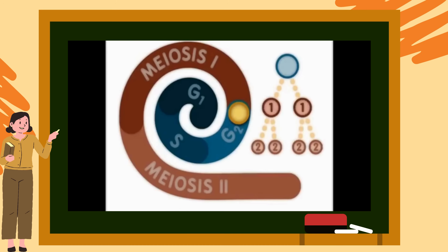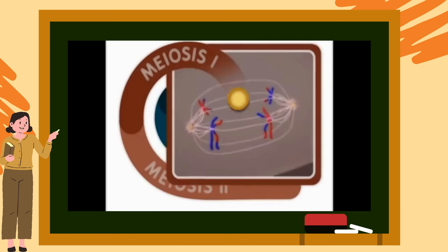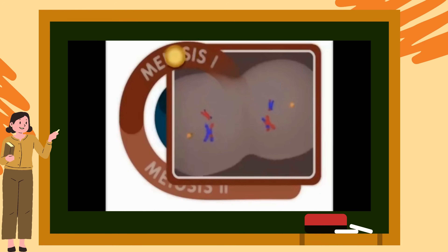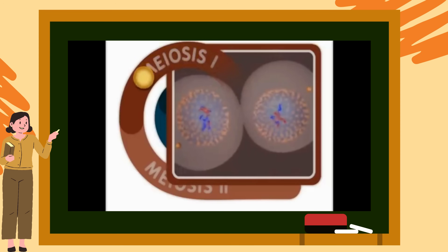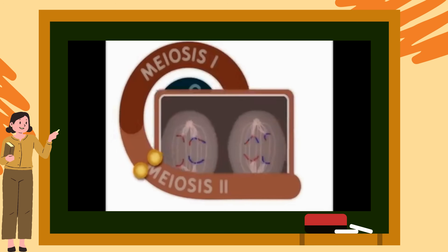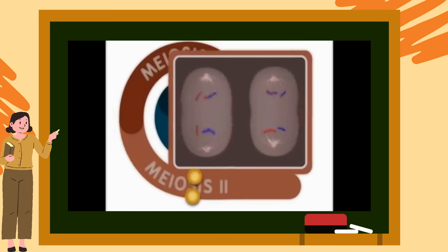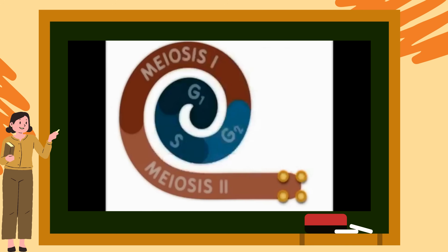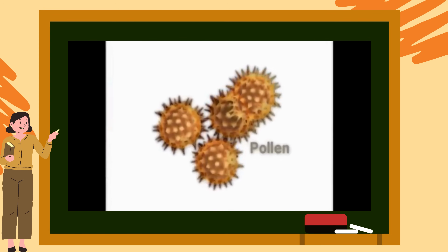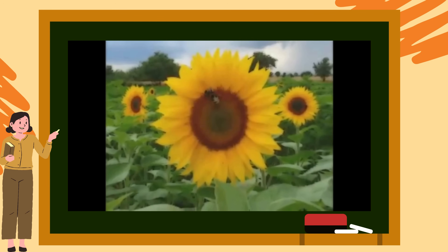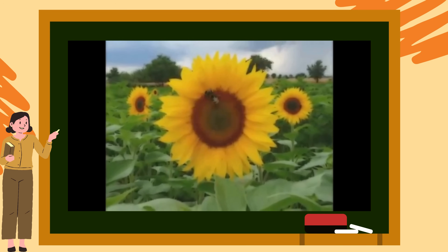There are two cell division events during meiosis. The first division, meiosis I, results in two unique daughter cells that have half the amount of DNA as the parent germline cell. The second division, meiosis II, results in four unique haploid cells that only have one copy of each chromosome. These haploid cells are the gametes that could go on to produce an offspring through sexual reproduction.